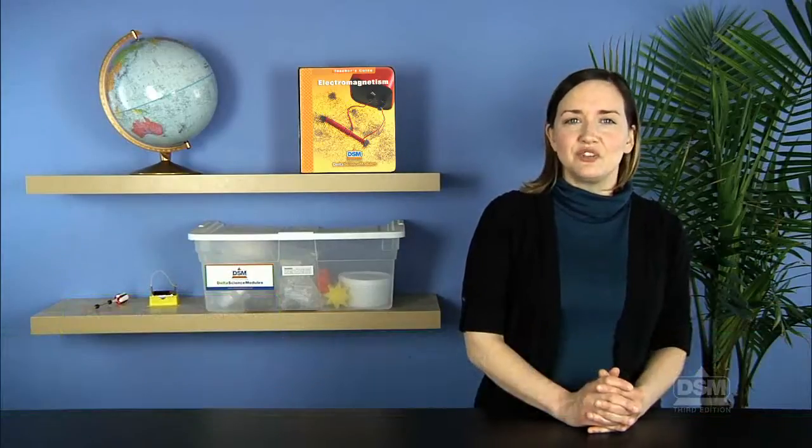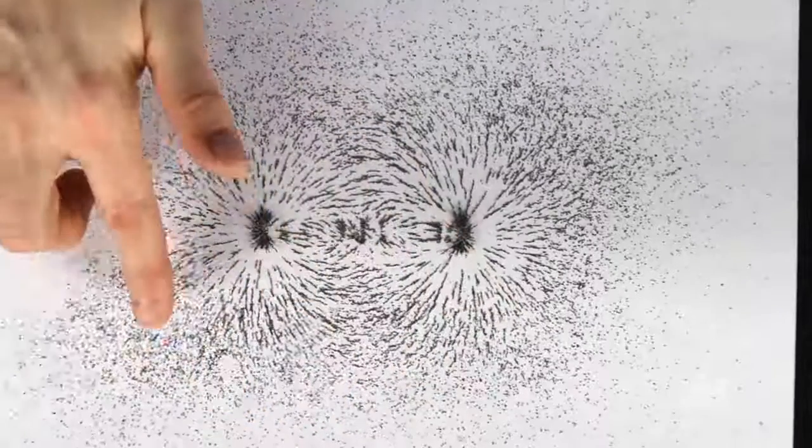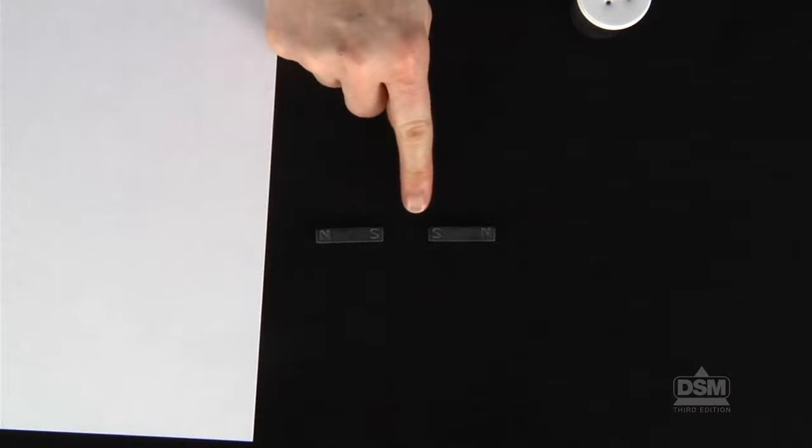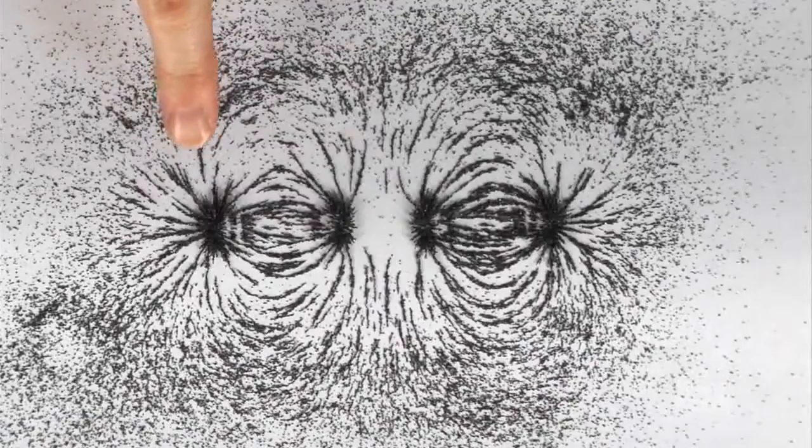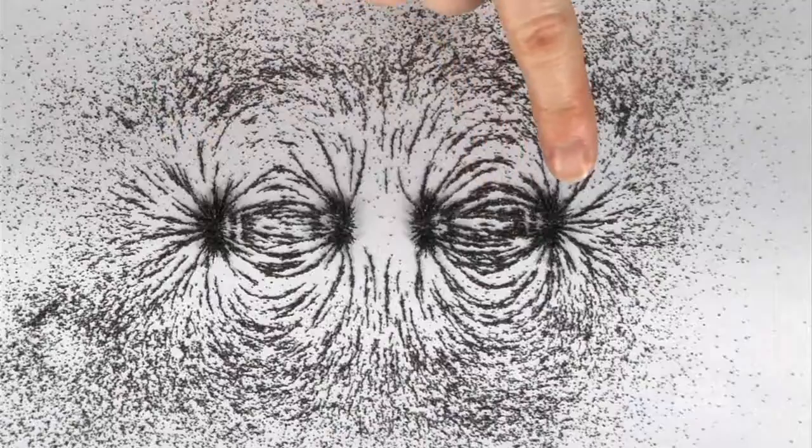When the magnets are placed so that the north pole of one magnet faces the south pole of the other magnet, the field lines between the magnets tend to join together. When the magnets are positioned south pole to south pole or north pole to north pole, the field lines between the two magnets do not join together. They curve away from or repel each other.